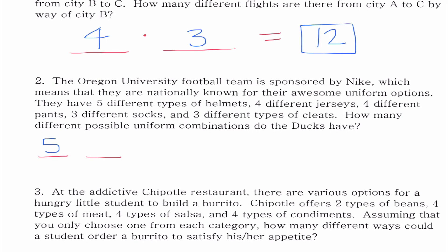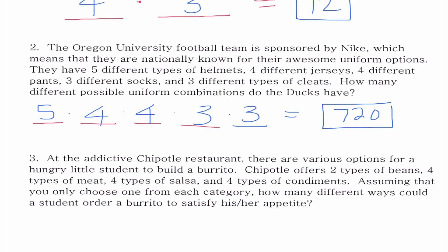We're going to start. We have five different types of helmets, four different jerseys, four different pants, three different socks, and three different types of cleats. So I'm multiplying five times four times four times three times three, which would give us an astounding 720 different uniform options that the Ducks can wear.